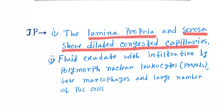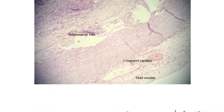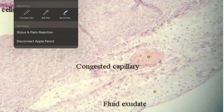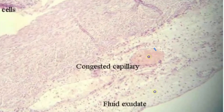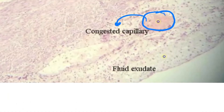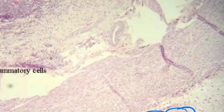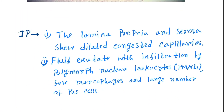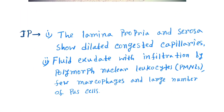The next picture shows the lamina propria and serosa with dilated congested capillaries. Here you can see this is a congested capillary, and here is another congested capillary.